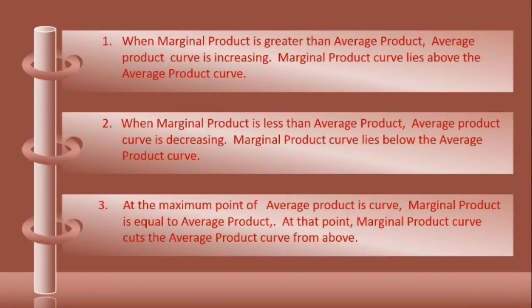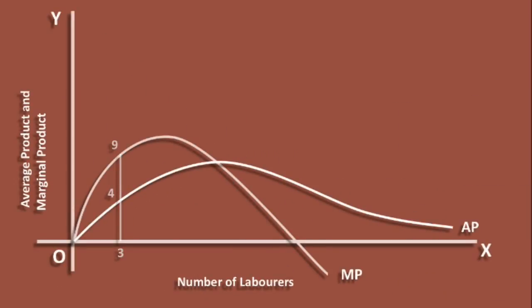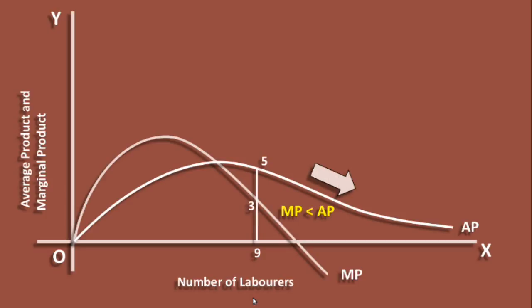We shall go to the second relation. When nine laborers are employed, average product is 5 units and marginal product is 3 units. Since marginal product is less than average product, the average product curve is decreasing and the marginal product curve lies below the average product curve.